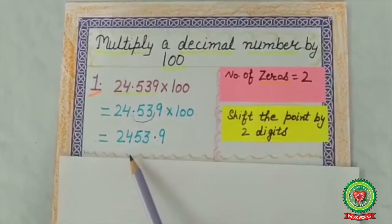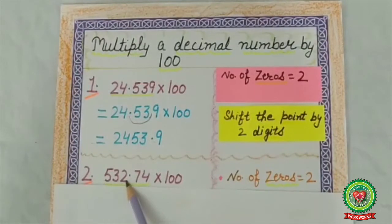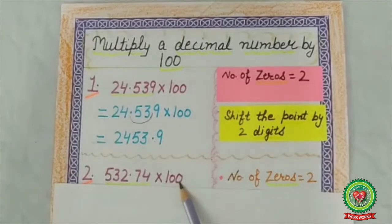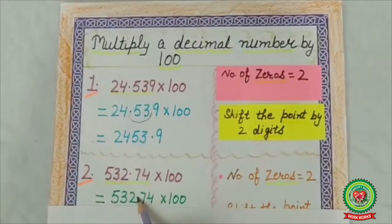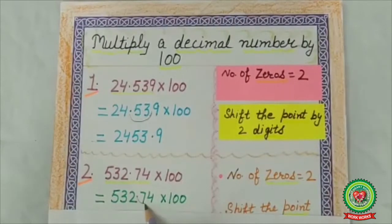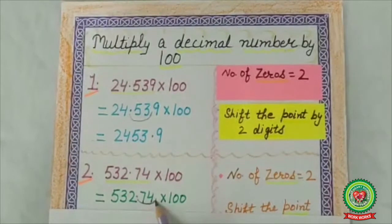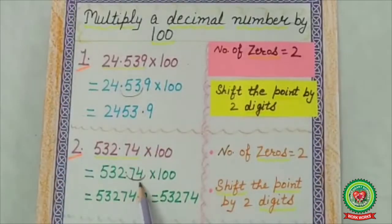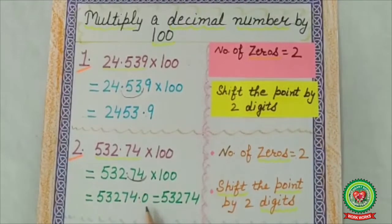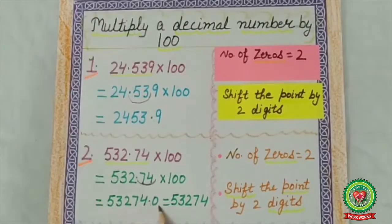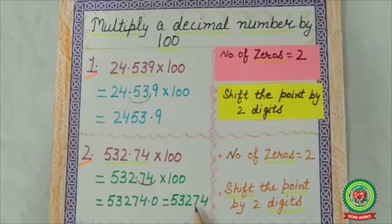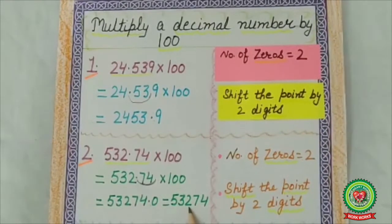Next example: 532.74 multiplied by 100. Number of zeros is 2. The point is currently between 2 and 7. We shift the point by 2 digits to the right. The point comes after 4, but no digit is there, so we put 0 after the point. The answer is 53274.0, which is equal to 53274.